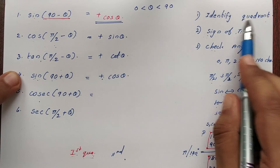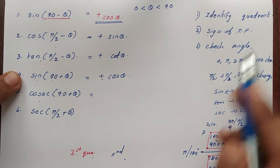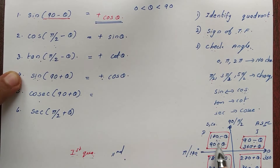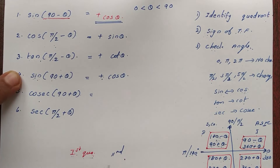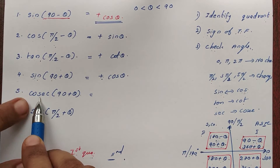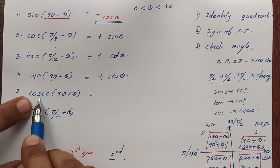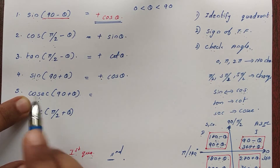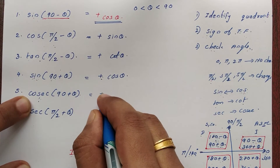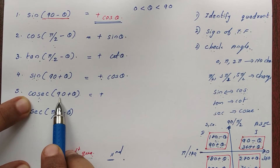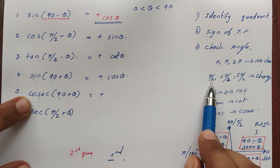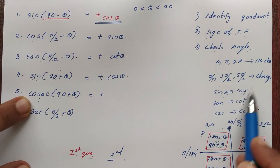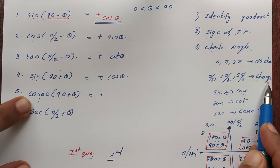The first step is to identify the quadrant: 90 plus theta is the second quadrant. Then check the sign. The second quadrant — check whether it is positive or negative. Then check the angle; the angle is pi by 2, so there is a change.